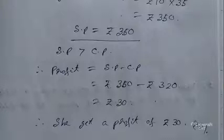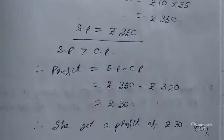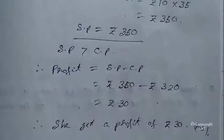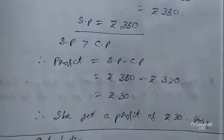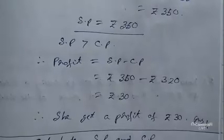Now coming to another topic: calculating selling price and cost price. In this case, one of either CP or SP should be given, and profit or loss should also be given.